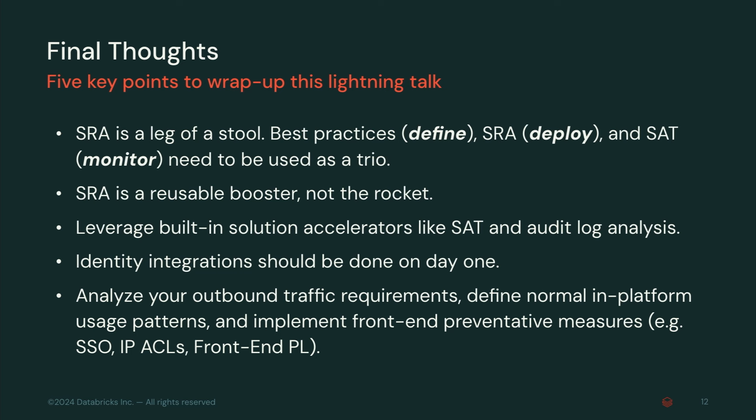As a general best practice when deploying SRA, analyze your outbound patterns. On AWS we have three options: open egress, firewall, or no outbound access at all. It's very important to monitor what assets are being communicated with and how you set that up. Define your normal inbound usage patterns — do you have data analysts, data scientists? Think about how you can monitor them and notice patterns that are out of the ordinary so you can act on it as soon as possible. Implement front-end preventive measures like SSO, IP access lists, which you can do through the Security Reference Architecture Terraform templates, or front-end private link.